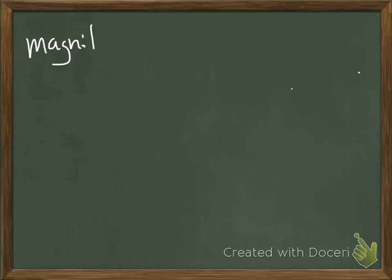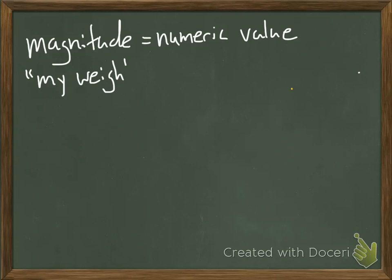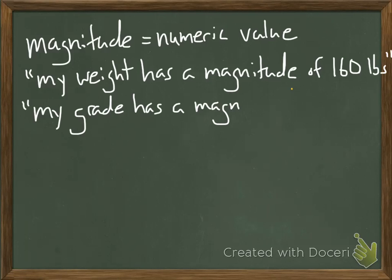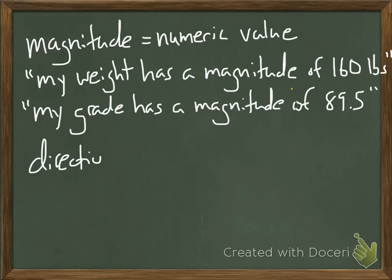The purpose of this video is to clarify the difference between magnitude and direction. Magnitude refers to a numeric value. For example, my weight has a magnitude of 160 pounds, or my grade has a magnitude of 89.5. It's a number.